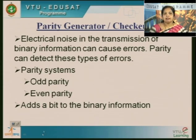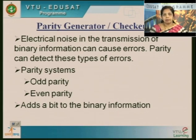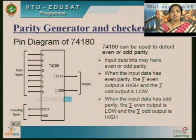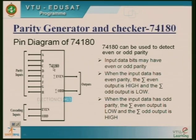What exactly is parity? It adds a bit to the binary information. To your original information, we add an extra bit called the parity bit. Either we can generate an even parity bit or an odd parity bit. There is an IC called 74180, and this is its pin diagram, which has inputs, outputs, and cascading capability.